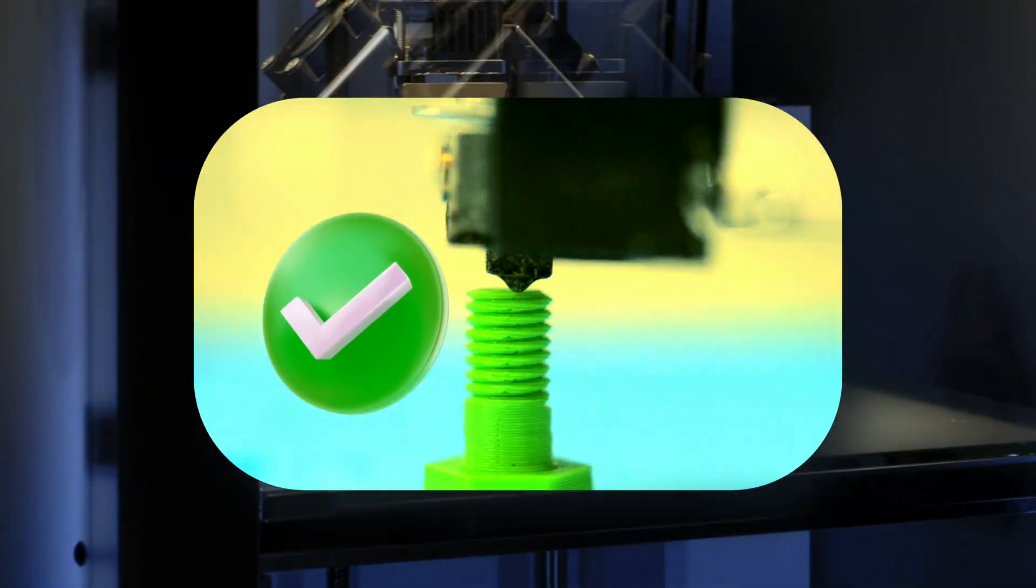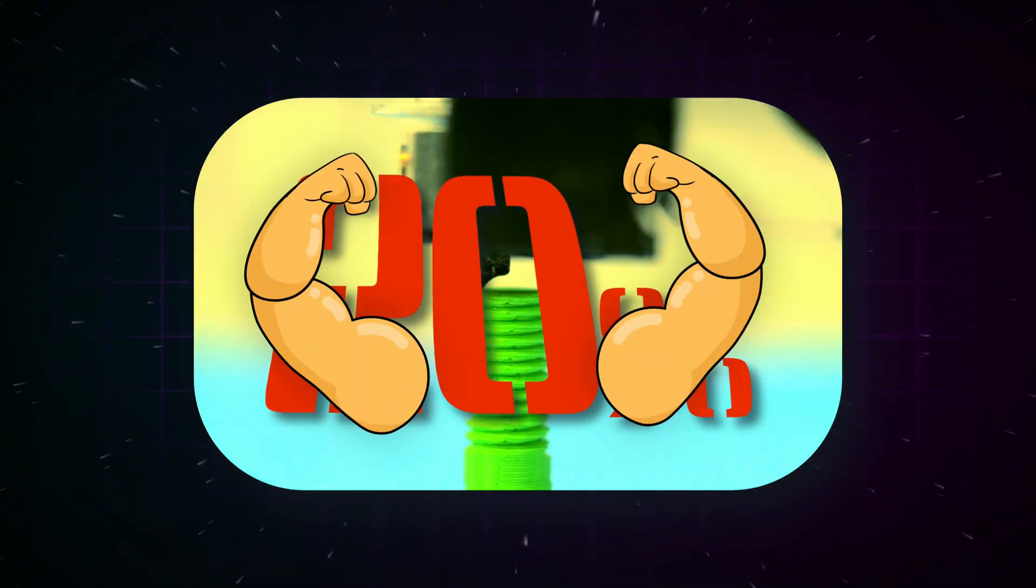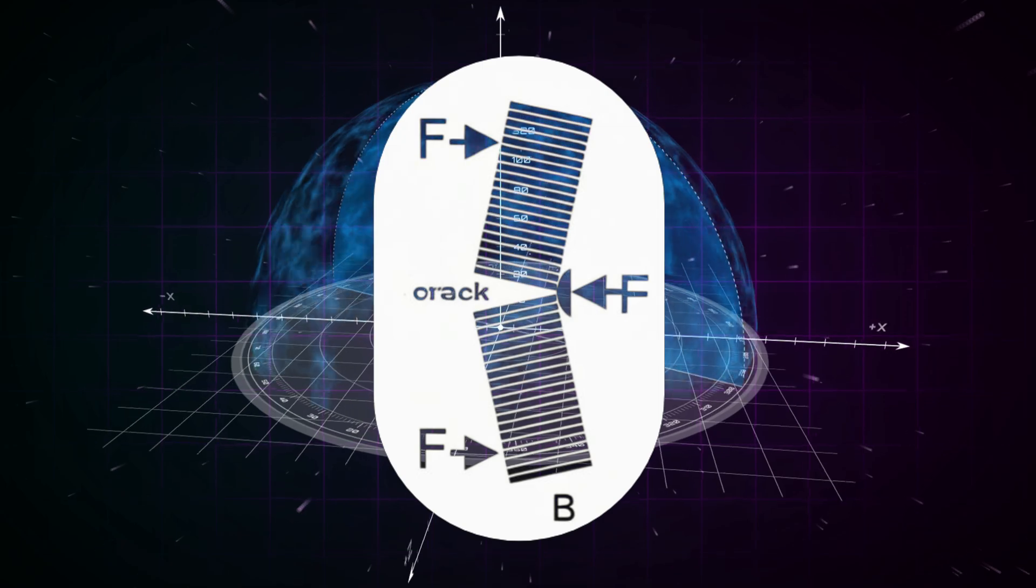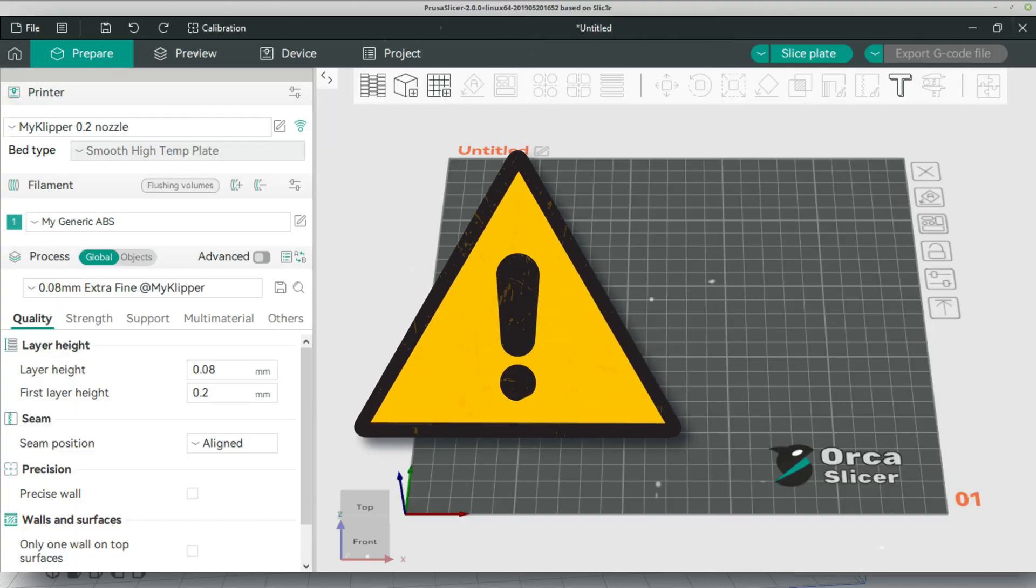There's a slicing technique that can make your 3D prints up to 20% stronger, especially in the weak Z-axis. But your slicer probably doesn't have it.